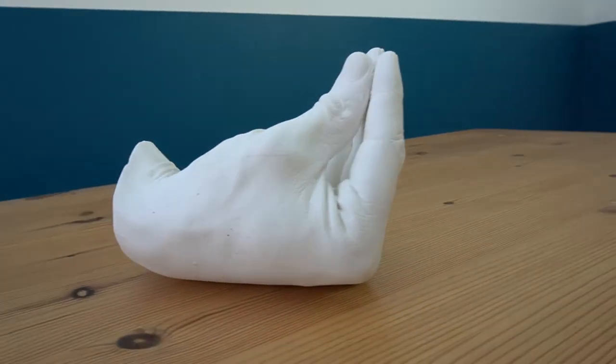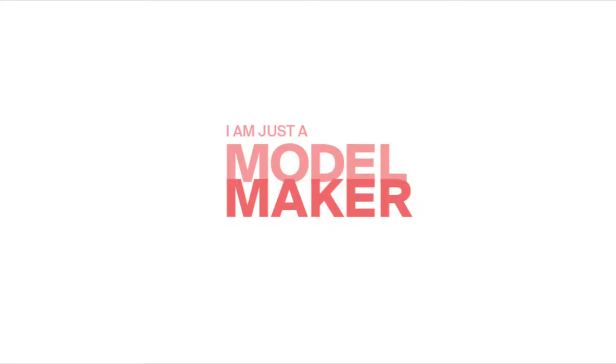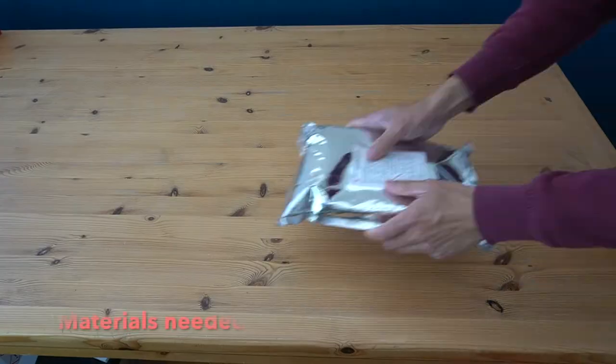Hey, welcome back to my channel. In this episode we'll be making a mold out of alginate and casting the form out of plaster. So let's get started. First of all, let's gather the materials that we need for the mold.